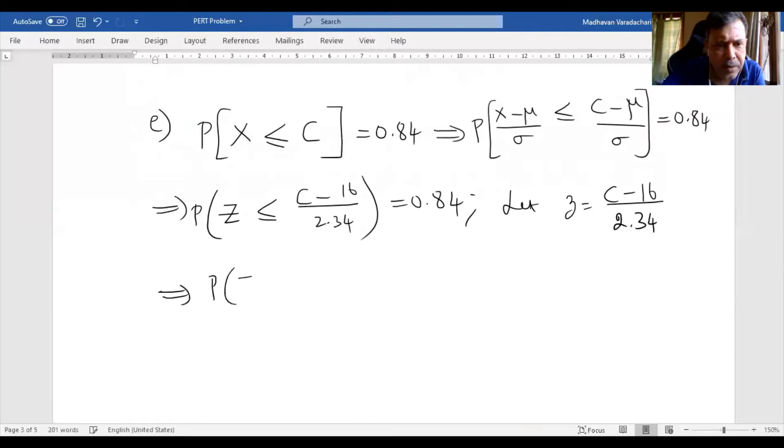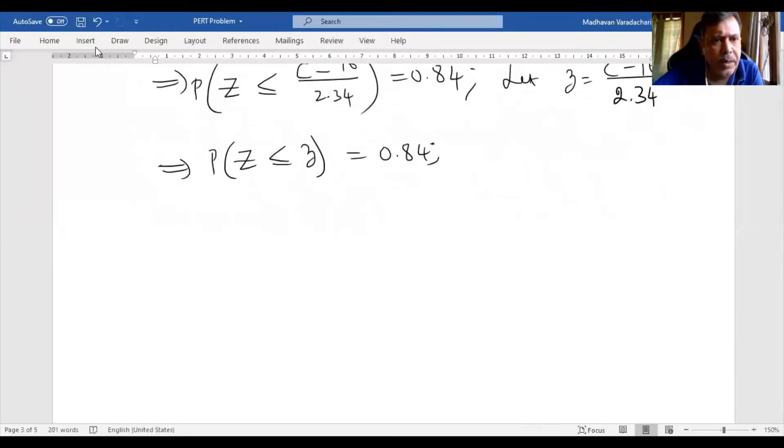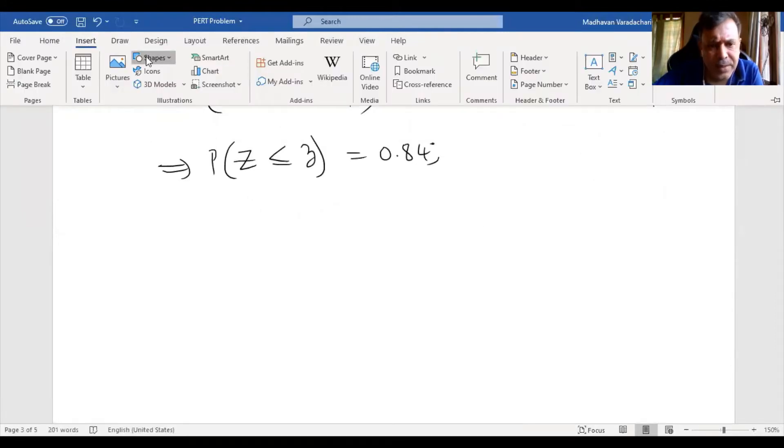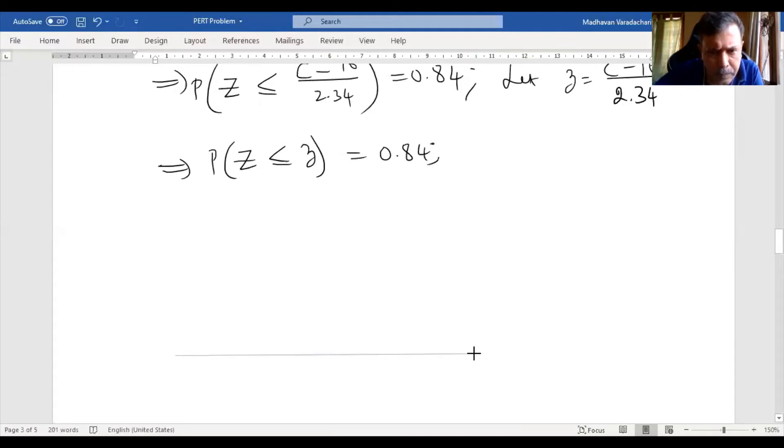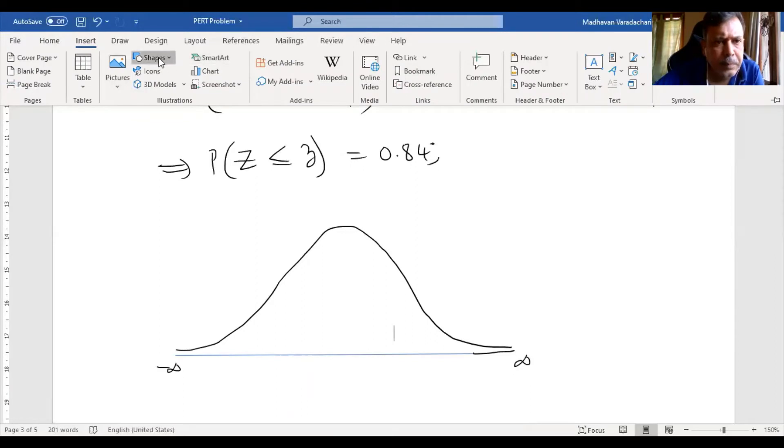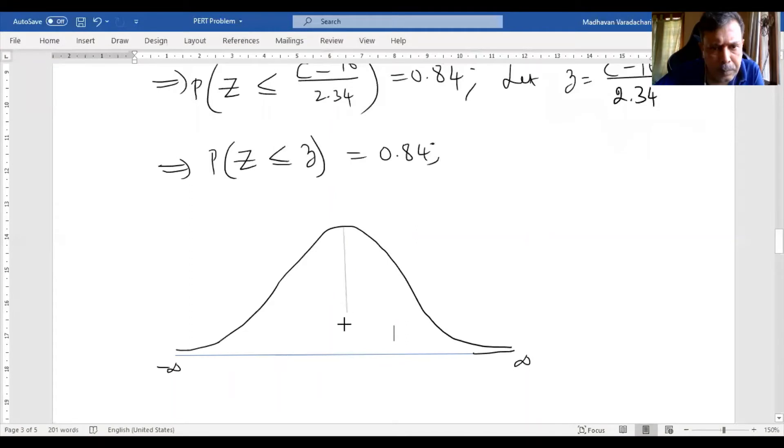So subtract with 16 and divide by 2.34. Let me recheck once again: 16 and 2.43. This is known to be 0.84. Now let us assume this entire thing as small z. Let small z equal C minus 16 by 2.34.